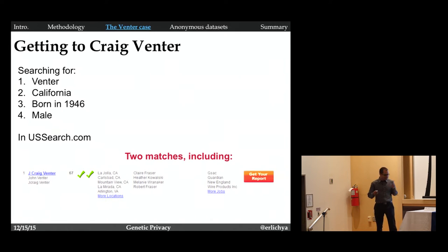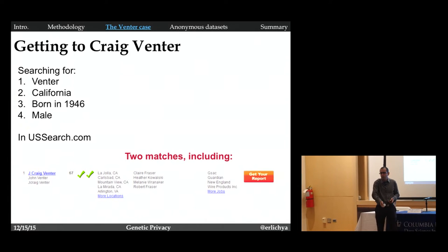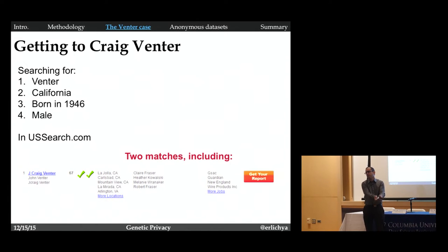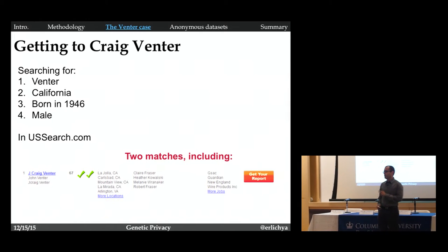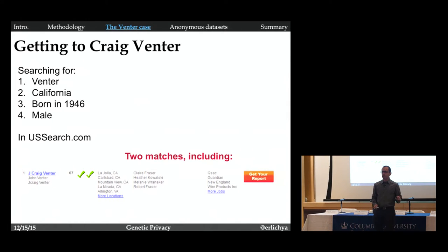But then you can ask, okay, that's nice. But when you started this process, you already knew that the genome of Craig Venter belongs to Craig Venter. So the main challenge, the real challenge, what we really want, is to see if we can take people that I don't know a priori their identity and see if I can identify them using this algorithm. Let's see if it works.